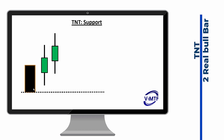On the IMTF side, if you have two real bars at a cross, the cross becomes a support. Same thing for a TNT: if you broke the high of that TNT with two real bars, the low of the TNT becomes a confirmed support right there — not the high, but the low of the TNT.